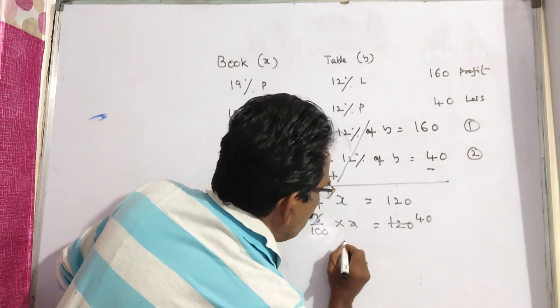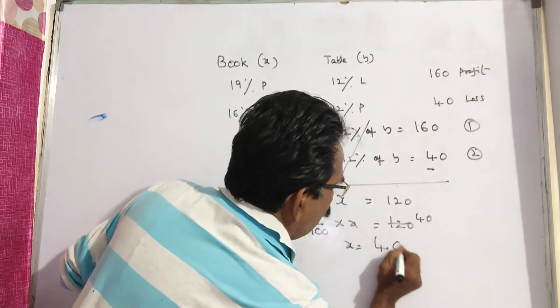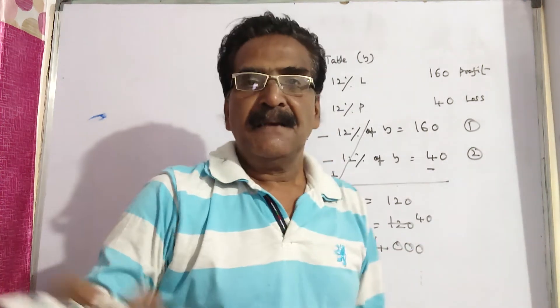Cancel the 40s. So X is equal to 4000. This is the price of the book.